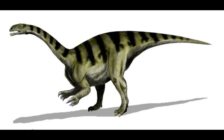During the Jurassic, mammals continued to evolve various adaptations that proved advantageous in their respective environments. These included improved sensory capabilities such as enhanced hearing and olfaction, and the development of more complex brain structures. These adaptations allowed mammals to exploit new ecological niches and improve their chances of survival in a world dominated by large reptiles.